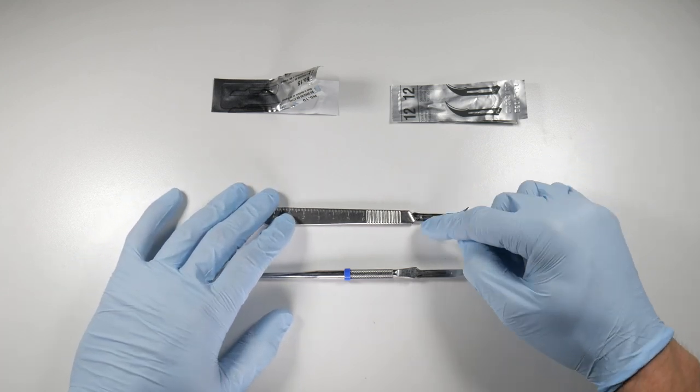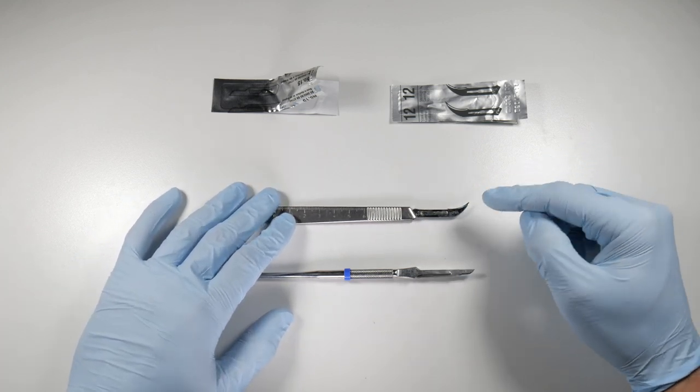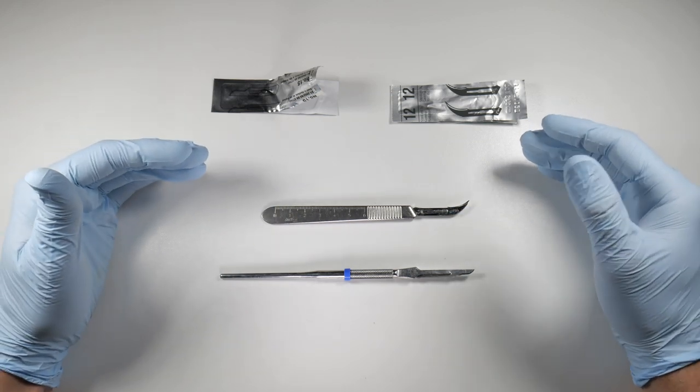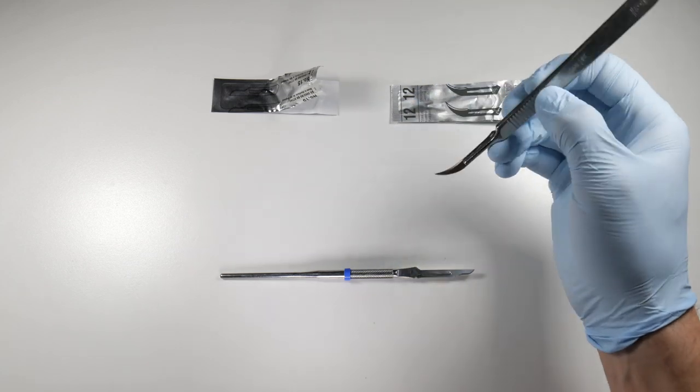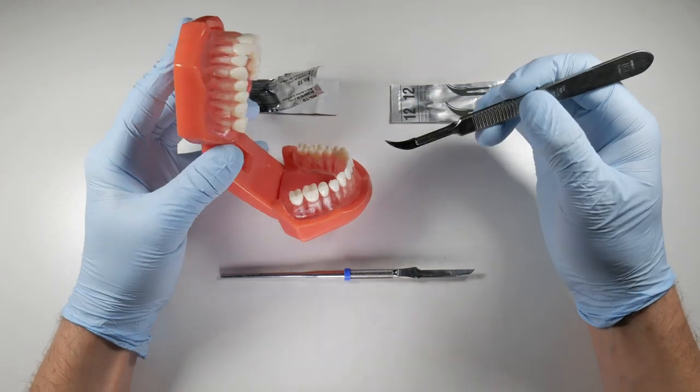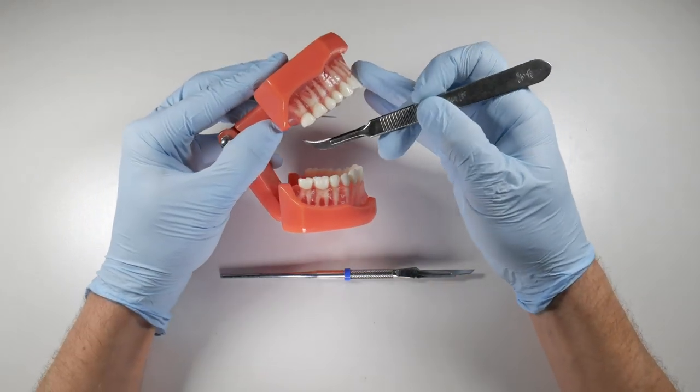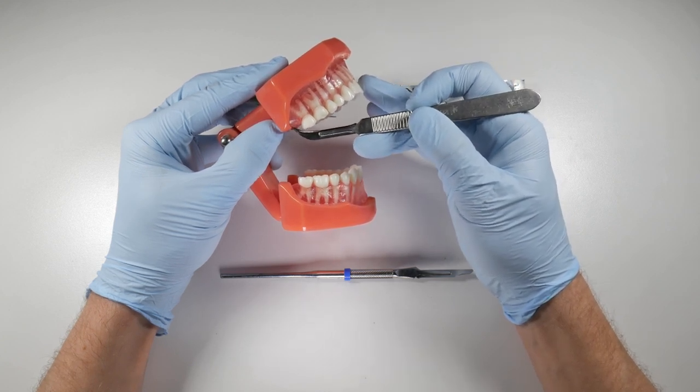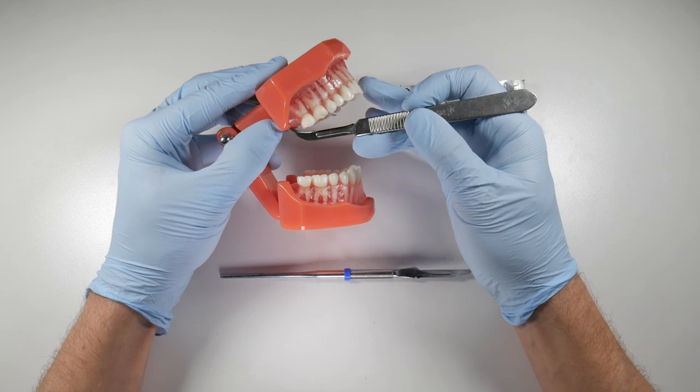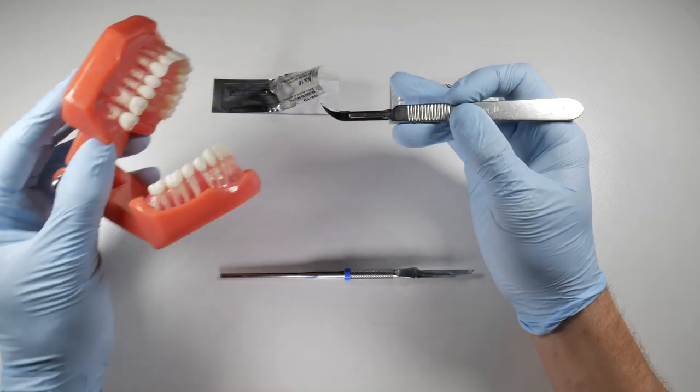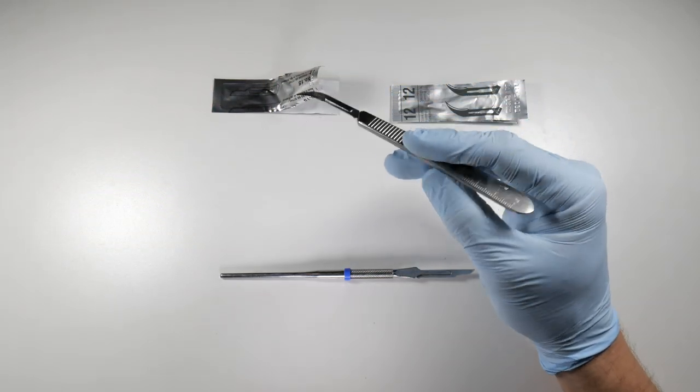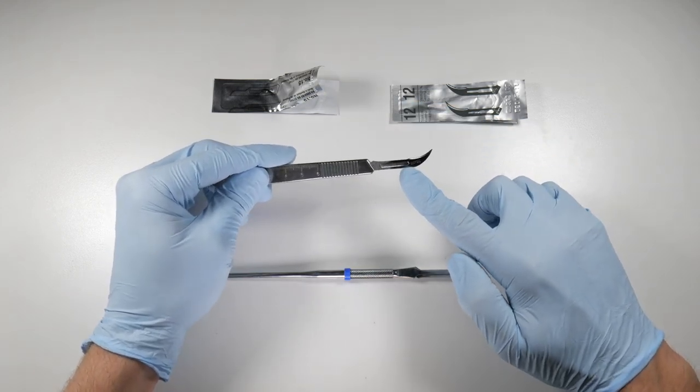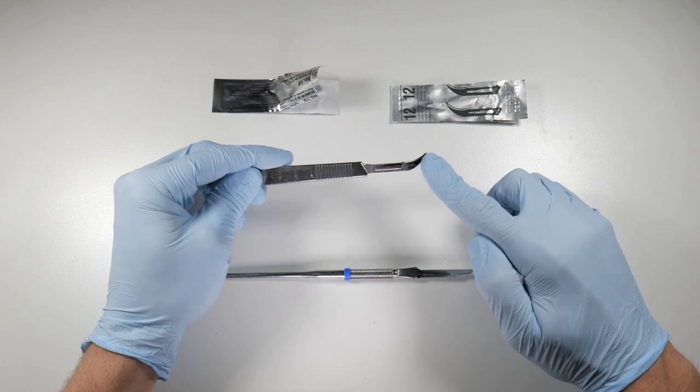Now if we move back to the blades here, the number 12 blade. The 12 is great for upper, say third molar incisions. You can reach in behind the tuberosity very easily because of this curve. We can get right up in behind the teeth to make that distal releasing incision up behind that upper third molar that's maybe still impacted under that tissue. Now you have to be very aware with the 12 because it also comes as a 12B blade.